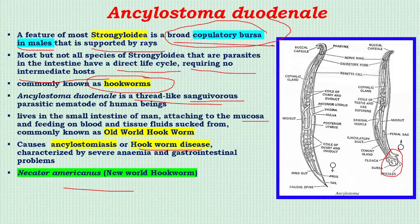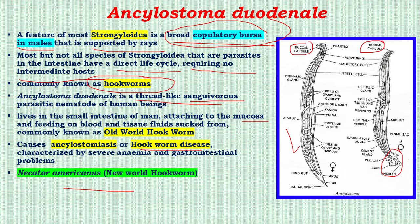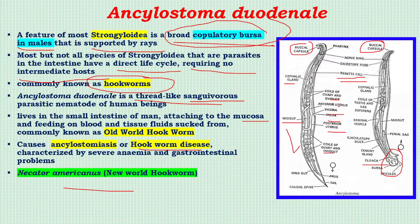Necator americanus, belonging to Strongyloidea, is known as the New World hookworm. In the diagram you can see the female and male Ankylostoma, both provided with a buccal capsule forming a hook-like structure for firm adhesion on the intestinal wall. They have a renette cell (excretory gland), cephalic gland, oviduct, uterus, vagina, vulva, and coils of ovary. In the male parasite there is a cloaca, but in the female, the anus is separate.